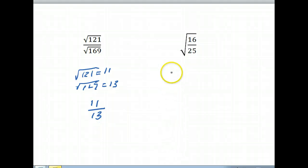If you run into a situation where the square root symbol is over the entire fraction, well, we can apply this rule. The square root of a over b is equal to the square root of a over the square root of b. So in this case,